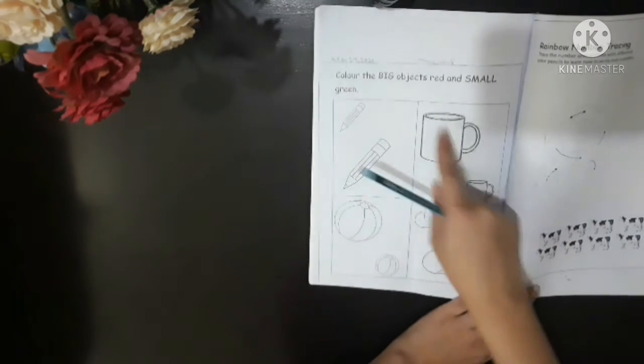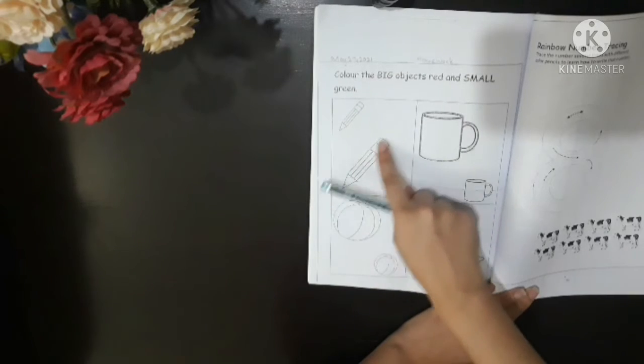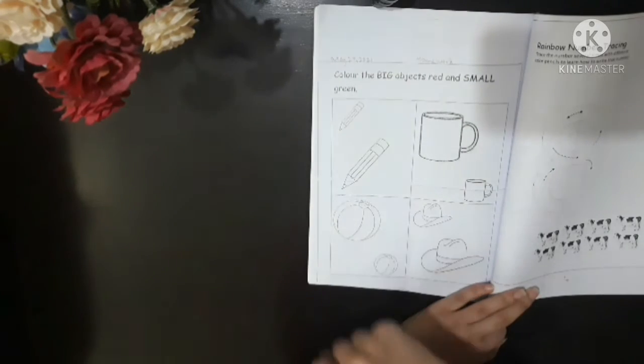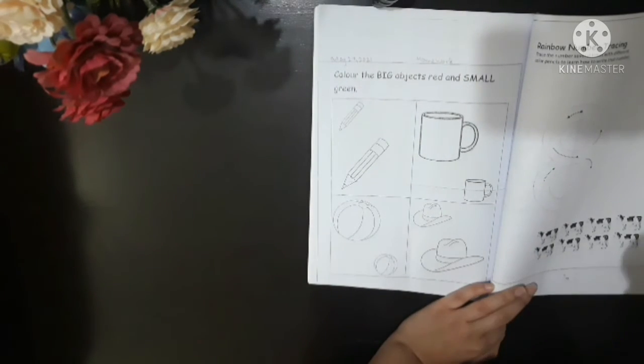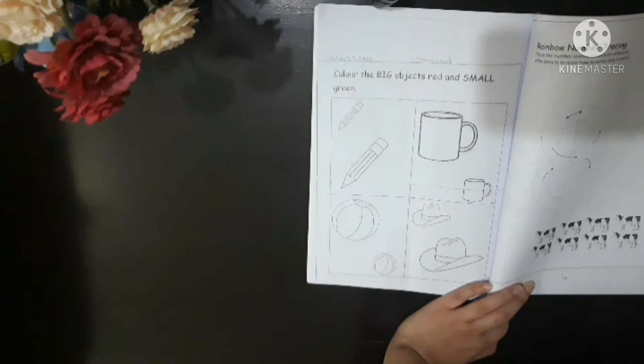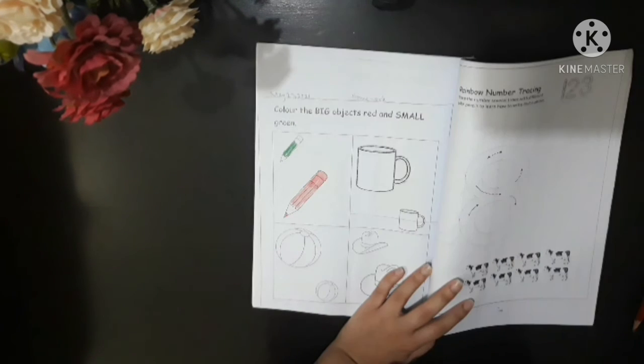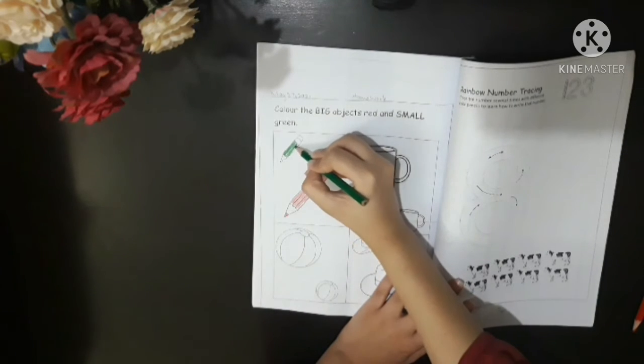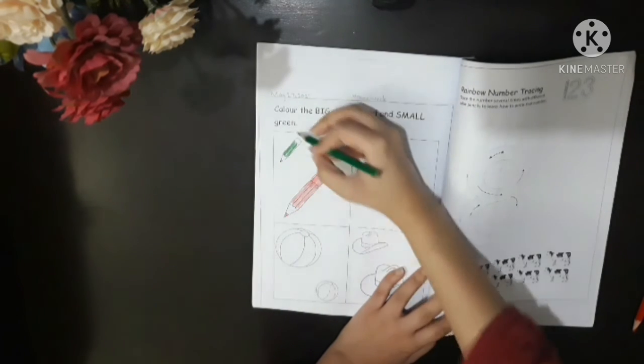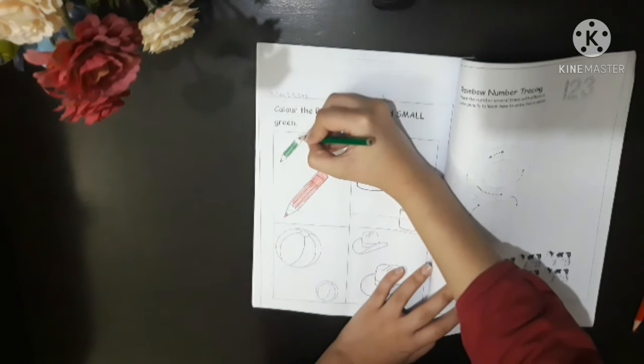Now we have to color the big objects red. So we are going to color this pencil red and this one green. I'm going to do one for you. Let's do it. So as you can see, I've colored the big pencil red and I'm coloring the small one green.